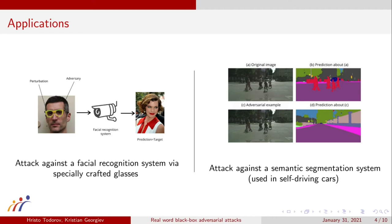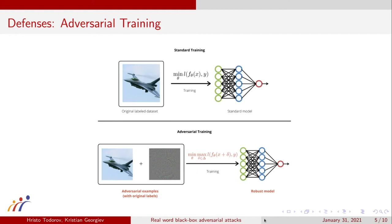Luckily, some methods of defense have been proposed. The ones that are not easily circumvented are based on an approach called adversarial training. The main idea behind it is that a given model can be trained on adversarial examples instead of regular data, with the objective of not misclassifying them. Because of that, the research on adversarial attacks is vital, due to the fact that the stronger they are, the stronger the defenses also are.